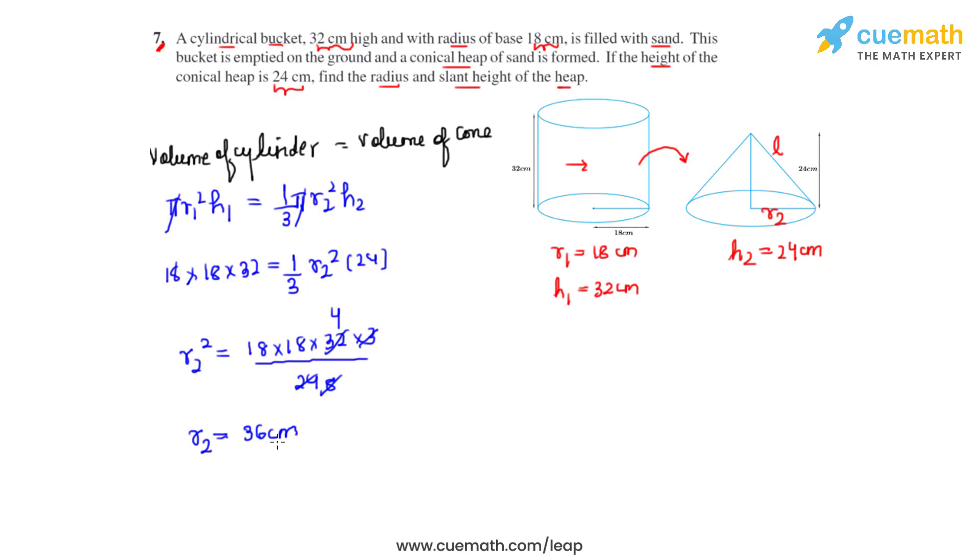Now that we have found out the radius of the conical heap, we can actually find the slant height of it also, because the formula to find the slant height L of a cone equals root over r² plus h².